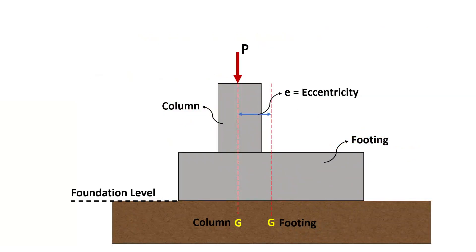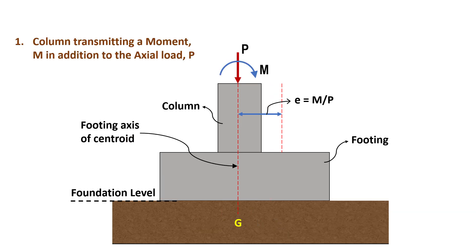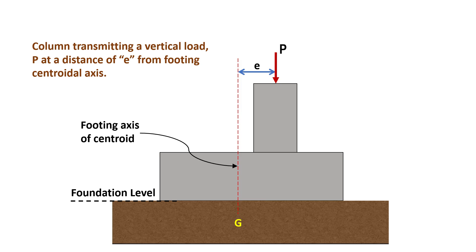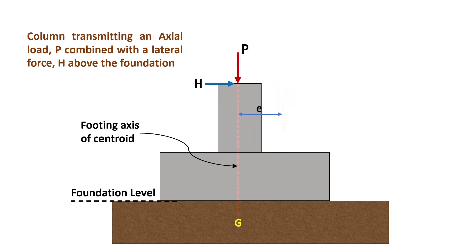In eccentric footings, the load from the column acts eccentrically with respect to the centroid of footing. This eccentricity can arise due to one or more of the following reasons: the column transmitting a moment M in addition to the axial load P, where eccentricity E equals moment M upon axial load P. The second reason is that the column transmitting a vertical load P at an offset of E from the centroid of footing. The third reason is column transmitting a vertical load P combined with a lateral force H above the foundation level.